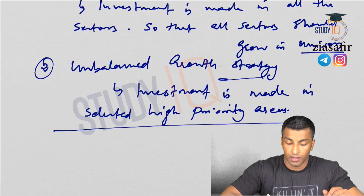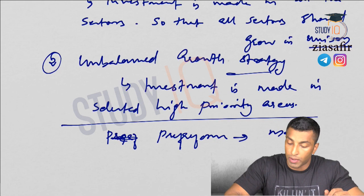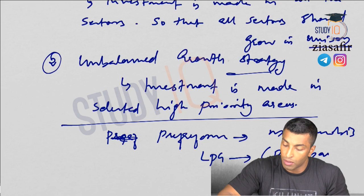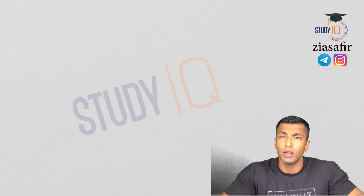During the pre-reform period, our planning was based on the Mahalanobis model. Then we went for LPG — liberalization — and broadly we call the post-reform approach the Manmohan model.